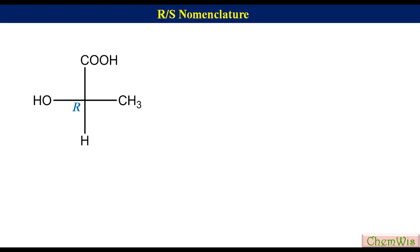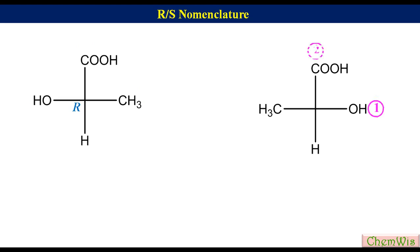If the Fisher projection formula is like this, label the groups based on their priorities as 1, 2, 3, and 4. Draw an arrow from 1 to 3 via 2. Since the fourth priority group is on the vertical line and the direction of arrow is counterclockwise, the absolute configuration will be S.